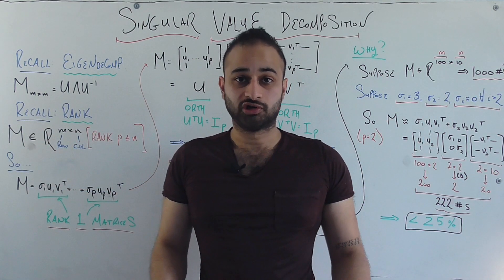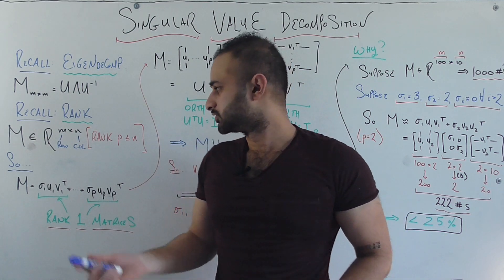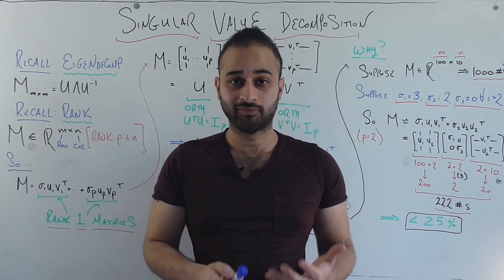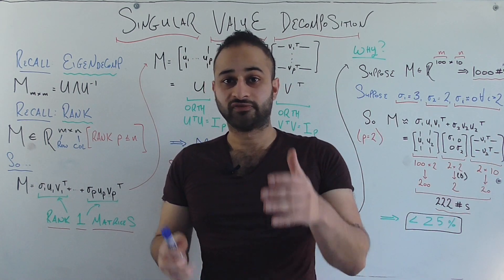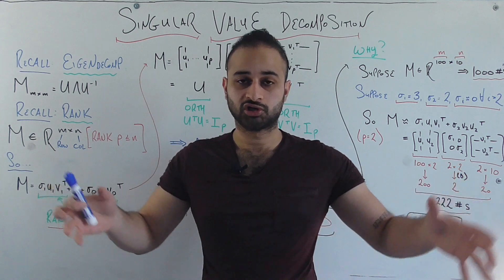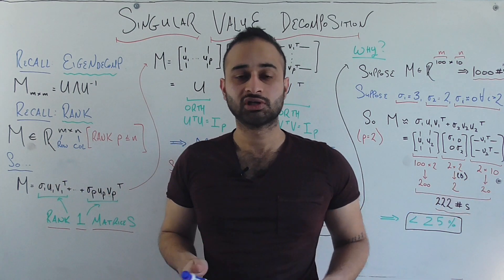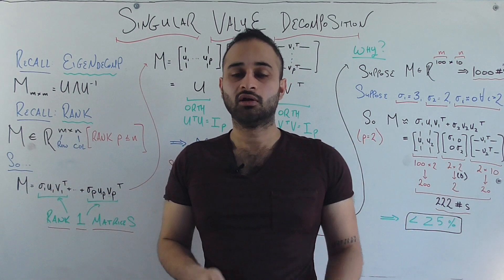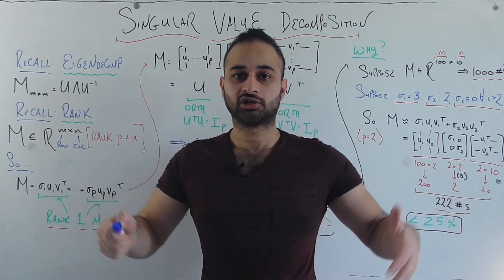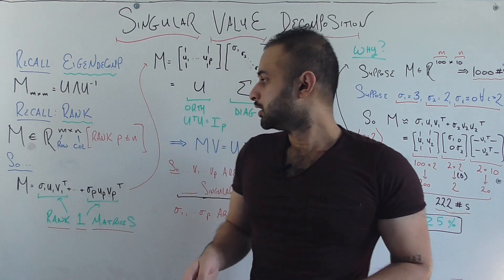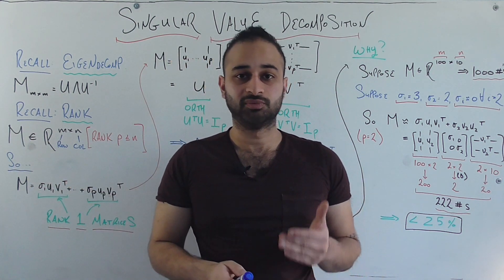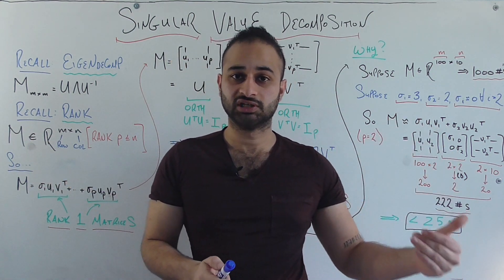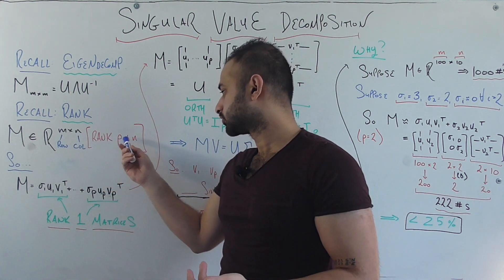Now another notion we're going to need to address early on to really grasp this is the rank. So remember the rank of a matrix is the number of linearly independent columns. So sometimes it's very small, which means that most columns are just combinations of a small number of columns. Sometimes it's very large, which means that most of the columns in our matrix are linearly independent from each other. So let's say the rank of our matrix M is P, and remember P has to be less than or equal to the number of columns in the matrix, so P is less than or equal to N.